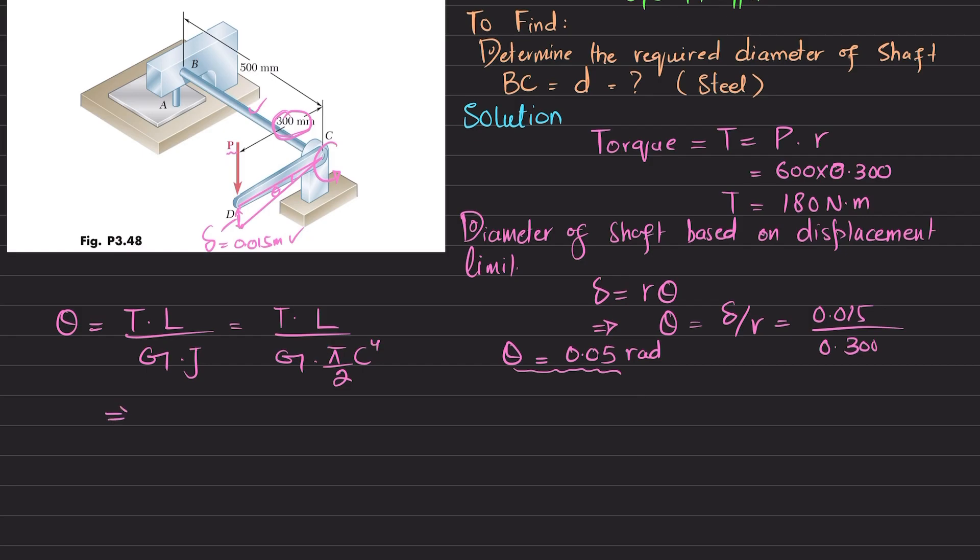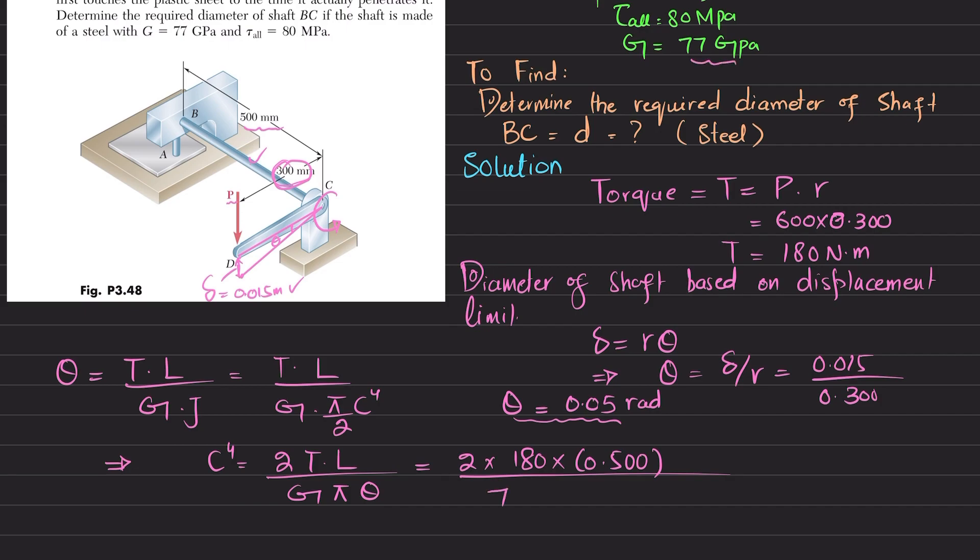From here, c to the fourth power equals 2 times T times L divided by G times pi times angle of twist. You have all the values: torque is 180, length of shaft is 0.500 meters, G is 77 times 10 to the power 9, pi is 3.1417, and theta is 0.05. From here you get c to the fourth equals 14.882 times 10 to the minus 9 meters to the fourth.